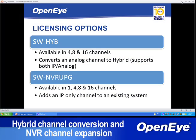There are two types of licenses which allow IP cameras to be connected to OpenEye recorders: hybrid channel conversion licenses and NVR channel expansion licenses.